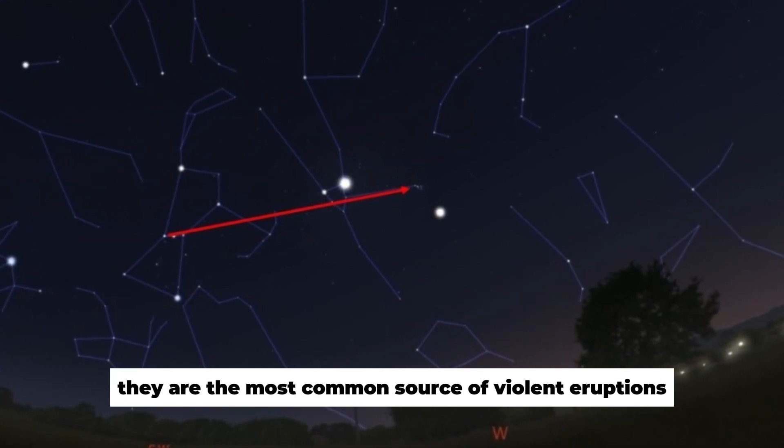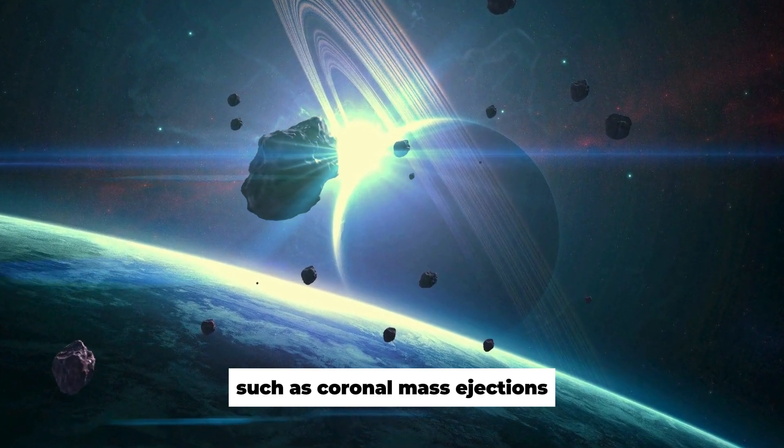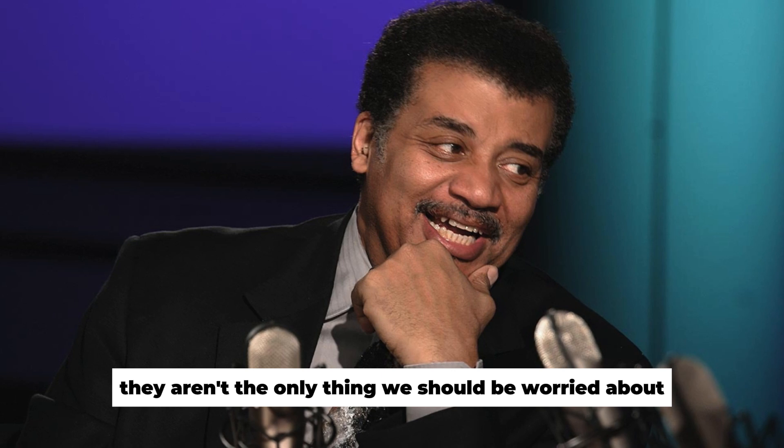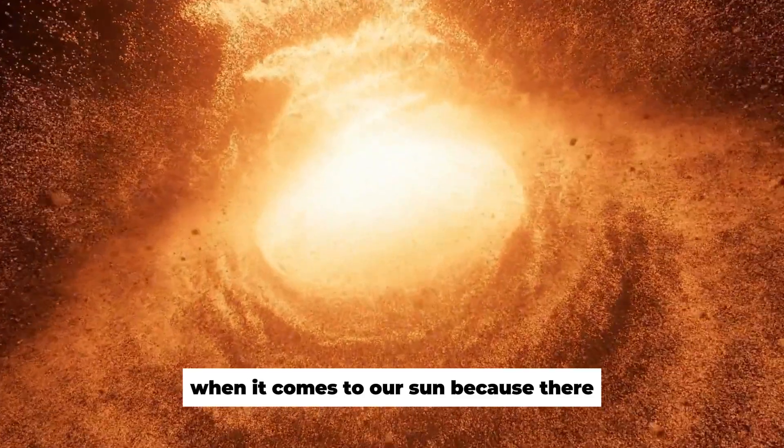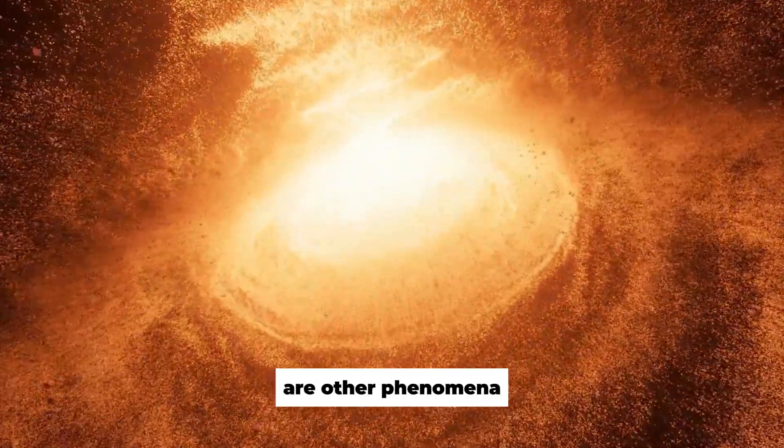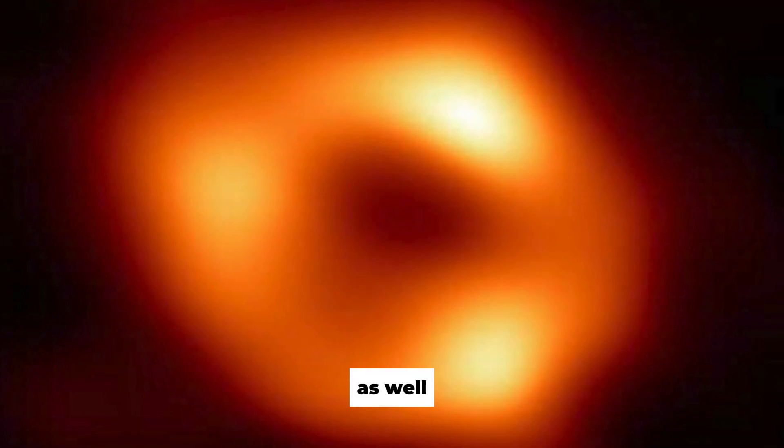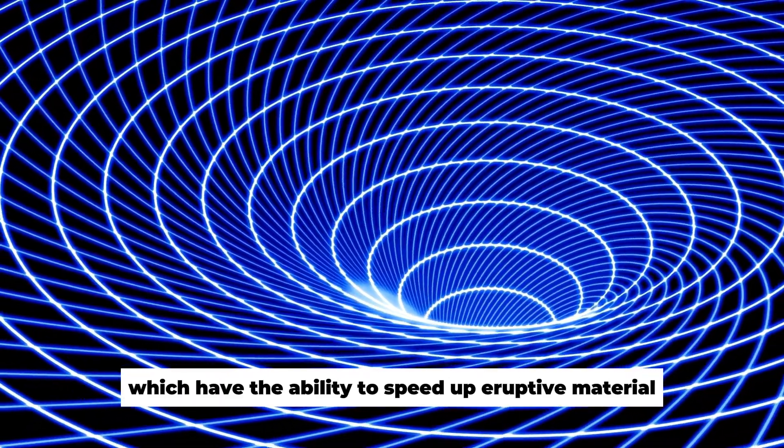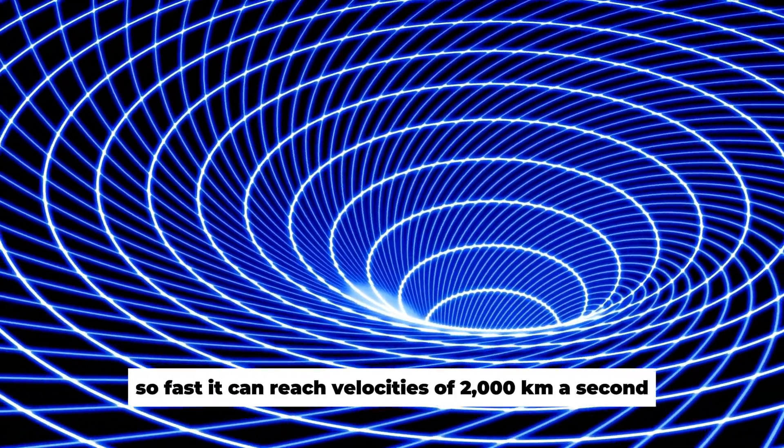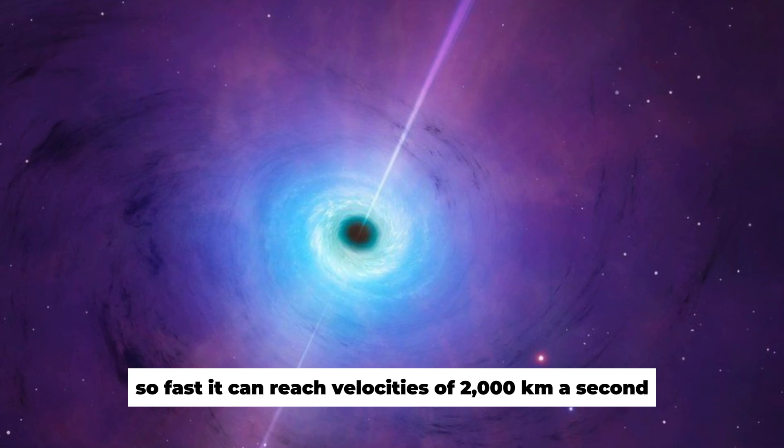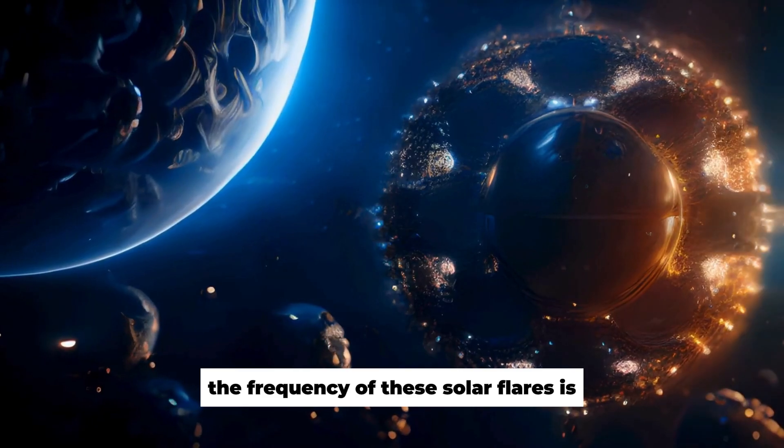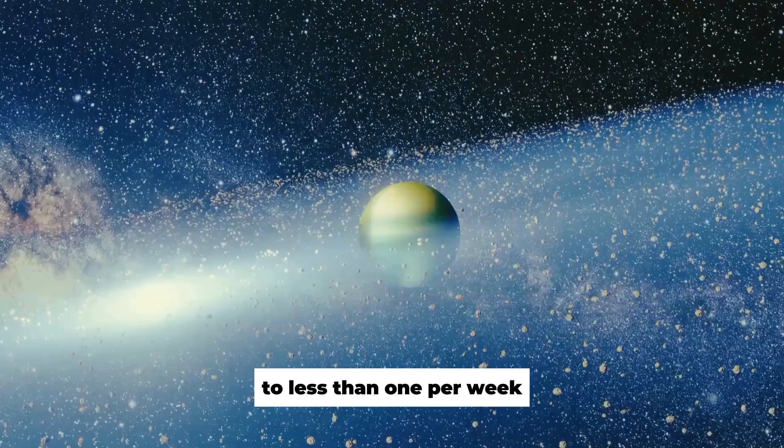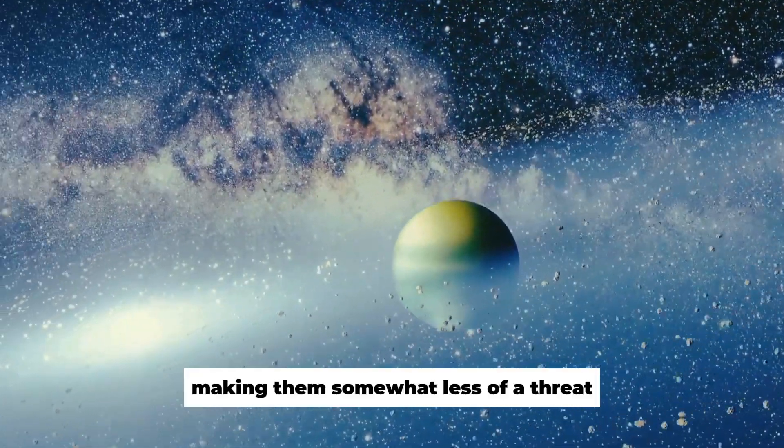They are the most common source of violent eruptions such as coronal mass ejections, which in other words are also known as solar flares. That said, they aren't the only thing we should be worried about when it comes to our sun, because there are other phenomena that can cause far more damage to our planet as well. A prime example of this is the flare sprays, which have the ability to speed up eruptive material so fast it can reach velocities of 2,000 km a second. The good thing is that the frequency of these solar flares is very inconsistent, and it can typically range from several times per day to less than one per week, making them somewhat less of a threat.